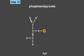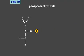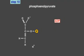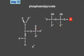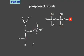In the tenth and last step of glycolysis, the enzyme pyruvate kinase transfers the high-energy phosphate group to ADP, forming ATP and pyruvate.